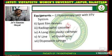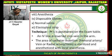First is fluoroscopy unit with wired system, second is spot film devices, third is radiographic cassettes, fourth is a long thin plastic catheter, fifth is IV line, and sixth is guide wire and disposable syringe.